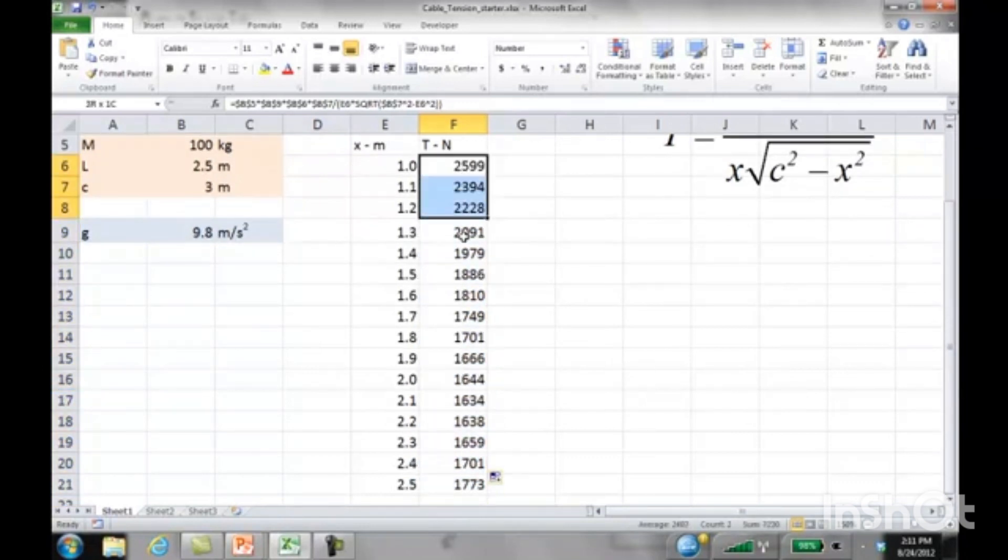We can look at the tension values as a function of attachment position, and the minimum is somewhere around 2.1. Attaching the cable about 2.1 meters from the wall will minimize the tension in the cable for this particular example. That's it for this example. Thank you.